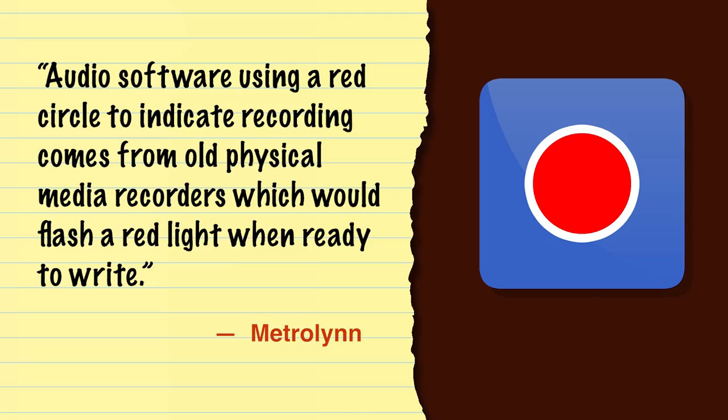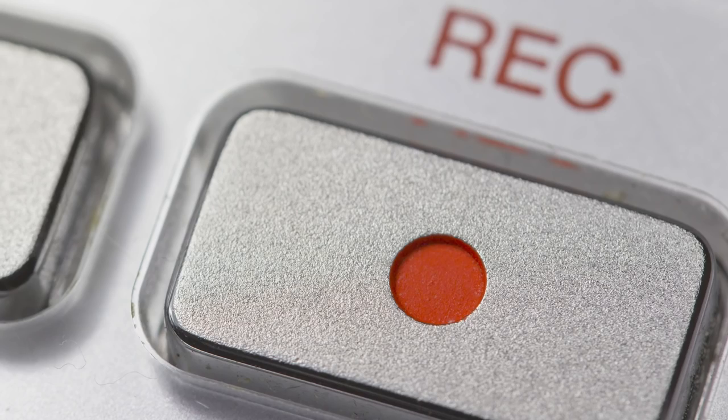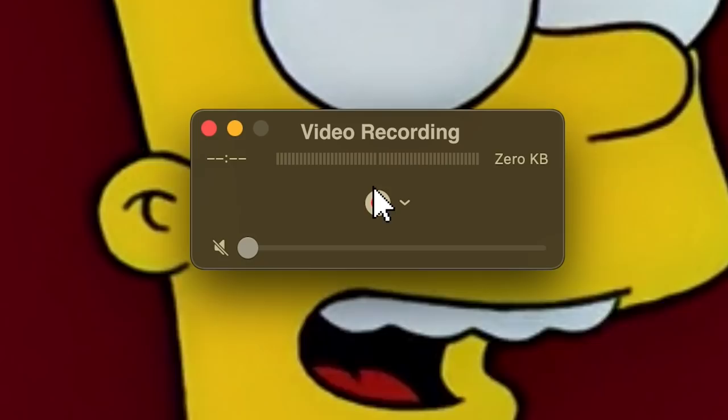A lot of you pointed out how much of our symbology around making audio or video recordings is tied up in anachronisms. Even in this digital age we talk about filming or taping things, and our iconography around cameras and audio recorders still often features stylized representations of machines using physical tapes or film. But one really interesting example came from my friend Metrolin, who noted that audio software uses a red circle to indicate recording — this comes from old physical media recorders that would flash a red light when ready to write. This is super meta: machines showed a red light when recording, which became the symbol on VCR record buttons, and now when I go to record on QuickTime I press a red circle that is a stylized representation of that stylized representation.